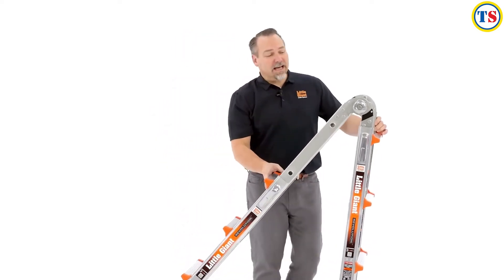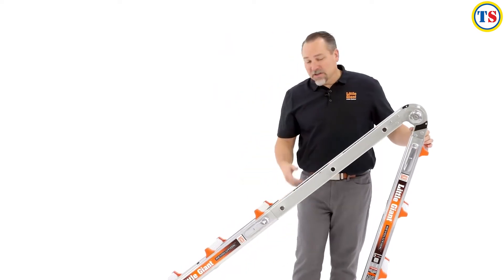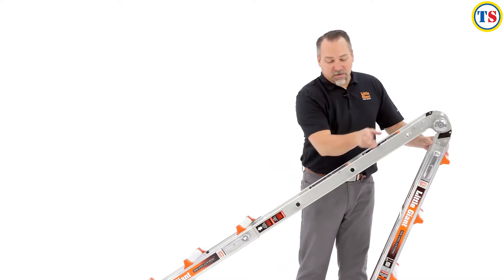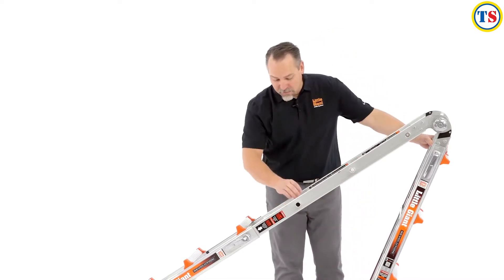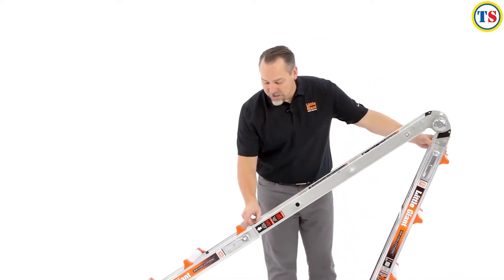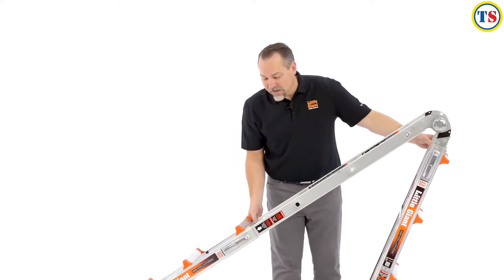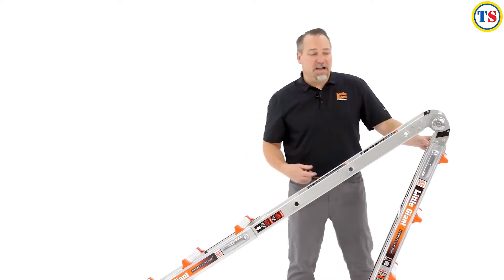Rock it out of the way. Lean the ladder, and then that leg should slide down to any one of these holes. These correlate with the rung on the intersection of the ladder. Once you find the height or length that you desire, then lock that rock lock back into place.